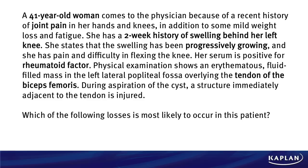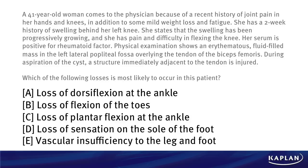So a lot is going on here. What's the question actually asking? It's asking which of the following losses is most likely to occur in this patient. It's not even asking what this thing is behind the knee or how it got there — just asking about what happens when we injure this structure next to the tendon. Answer choices all deal with nervous system or vascular issues: A) loss of ability to dorsiflex at the ankle; B) loss of toe flexion; C) loss of plantar flexion at the ankle; D) loss of sensation on the sole of the foot; E) vascular insufficiency to the leg and foot. Take a few moments, think carefully, and select what you think is best.